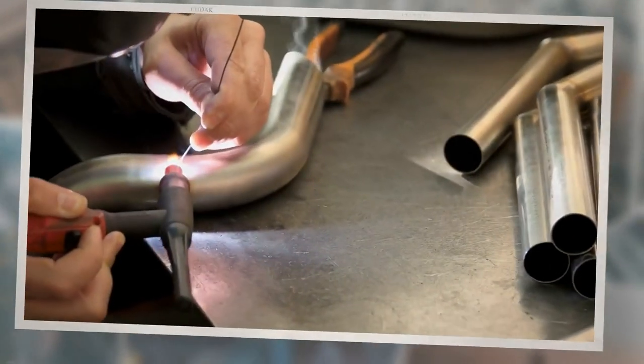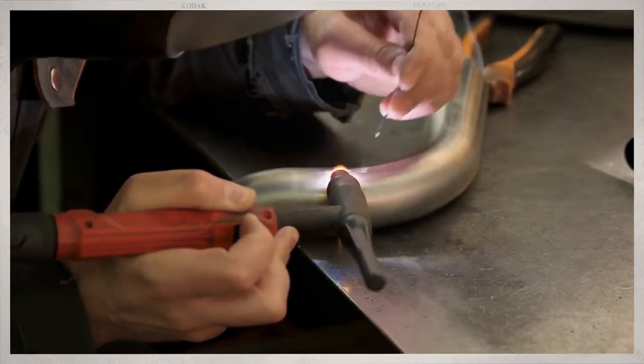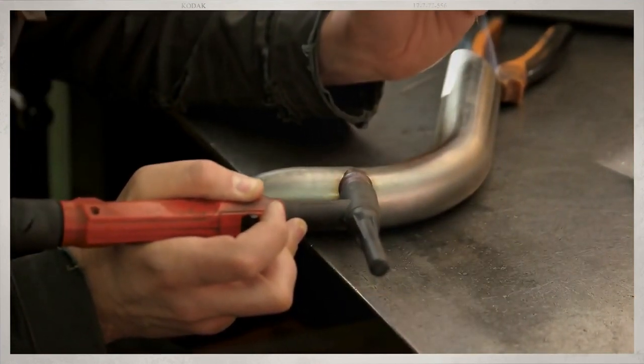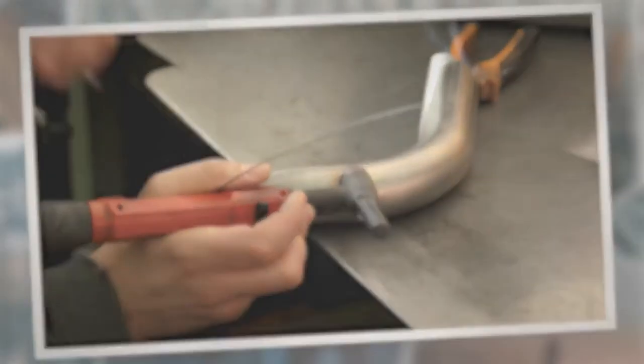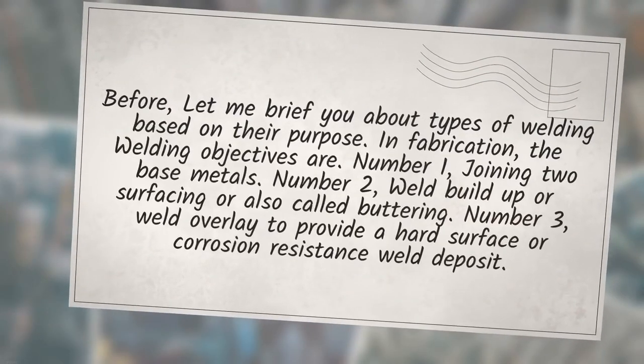The selection of the right welding electrodes or filler wire is an expert task performed by welding engineers based on factors such as base material types, grade, material properties, and service requirements. Before proceeding, let me brief you about types of welding based on their purpose.